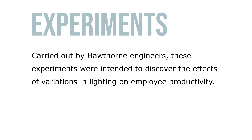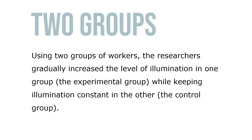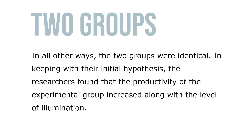Carried out by Hawthorne engineers, these experiments were intended to discover the effects of variation in lighting on employee productivity. Using two groups of workers, the researchers gradually increased the level of illumination in one group — the experimental group — while keeping illumination constant in the other — the control group. In all other ways the two groups were identical. In keeping with their initial hypothesis, the researchers found that the productivity of the experimental group increased along with the level of illumination.